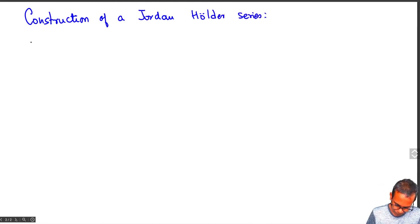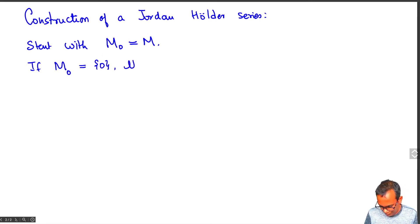You start with M0 equal to M. If M0 is trivial, then there is nothing to do.